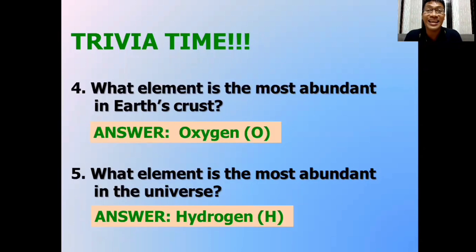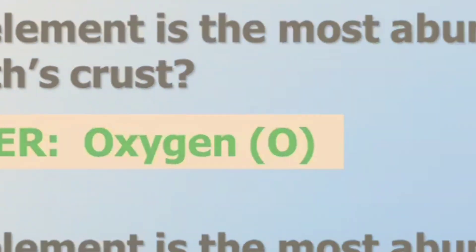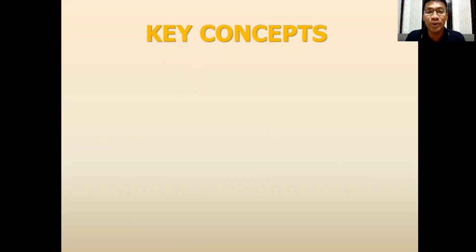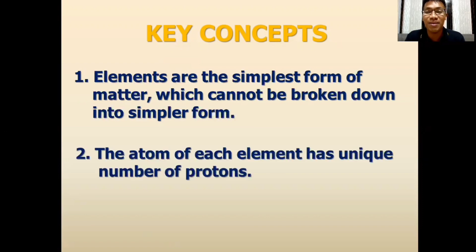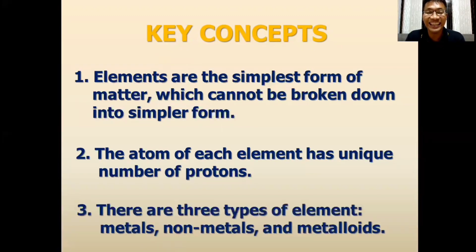For this lesson, we have to remember the following key concepts. Elements are the simplest form of matter, which cannot be broken down into simpler form. Second, the atom of each element has unique number of protons. And lastly, the elements in the periodic table can be classified as metal, non-metal, and metalloid. And this is based on their properties.